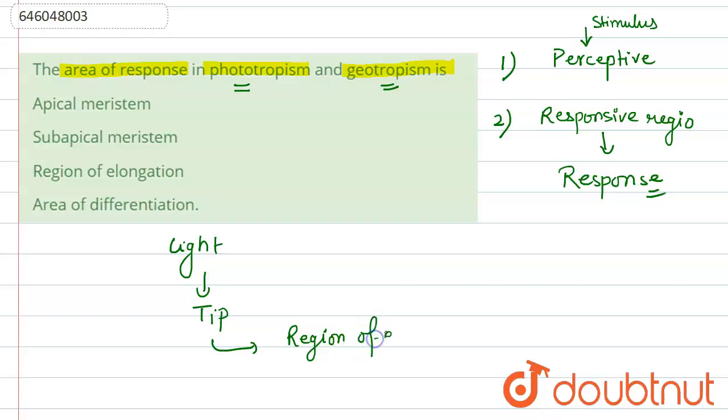zone. The region of elongation, generally on the shaded side and on the lower side, whereas